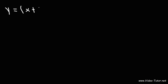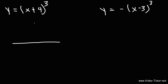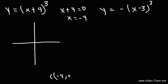Go ahead and try this example: graph y equals x plus 4 raised to the third power. If we set the inside part x plus 4 equal to 0 and subtract 4 from both sides, we get x is equal to negative 4. So the x-coordinate of the center will be at negative 4, meaning the graph shifts 4 units to the left. Because we have a positive sign in front, it's a cubic function that is always increasing, so it should look something like this.